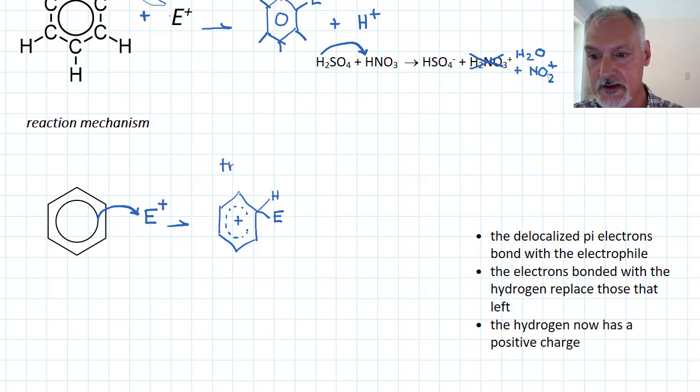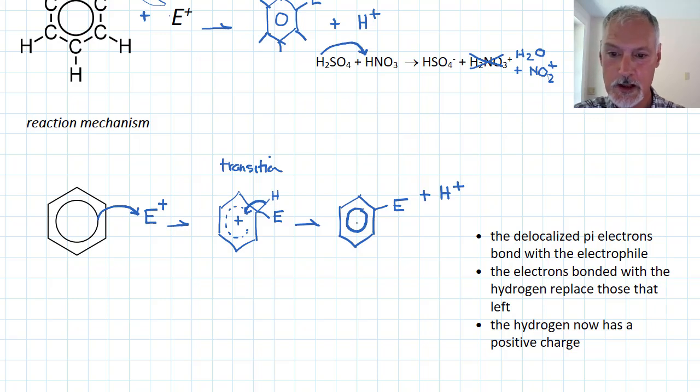And what now happens is the hydrogen will supply the electrons to complete the ring and make it stable, thereby losing its bond or its connection to the benzene ring. But it does re-establish the integrity of that ring. E is now bonded at that site, and the hydrogen, which gave up its electrons, has now been released. So that represents the overall reaction.